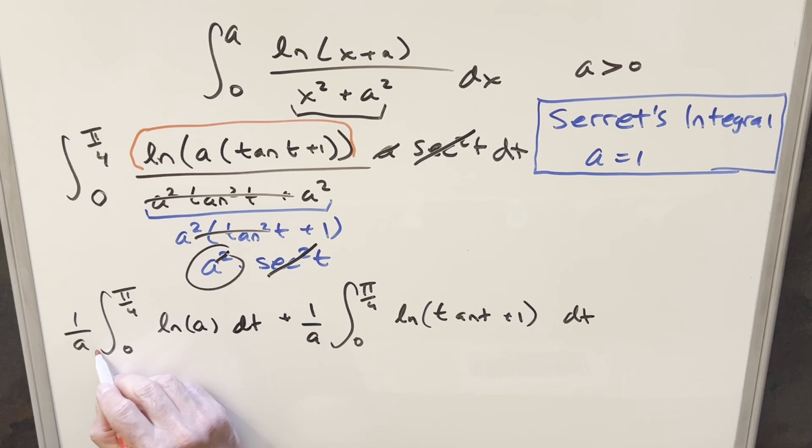For this integral, natural log of A is just a constant, so we can bring that out front of the integral, and then just integrate 1, and finish off this easy piece right here. When we do that, we're going to have natural log of A over A in the front. Integrating 1, that's just going to be t evaluated from 0 to pi over 4. Evaluating this, first when you evaluate at 0, it's going to 0 everything else. We really just need to plug in pi over 4.